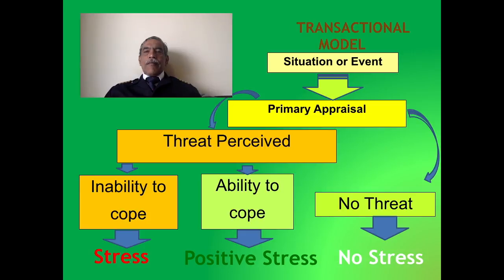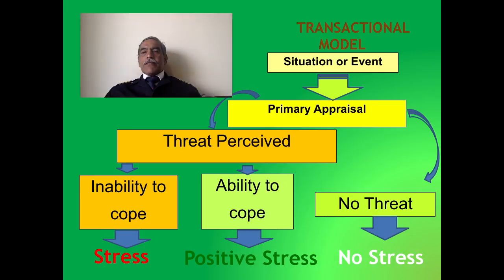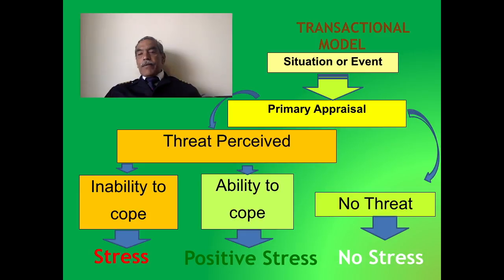Let us see the transactional model of stress. Firstly, there is a situation or an event which is not normal, or events could be even normal, but there is a situation which a person is not used to in day-to-day life. There is a primary appraisal to see if there is a threat because of that situation or event. If there is no threat, then the person experiences no stress. But if a threat is perceived, the mind reassesses its ability to cope up with that threat. If it is able to cope up, it results in positive stress. If it is not able to cope up, it results in what we call normal stress.